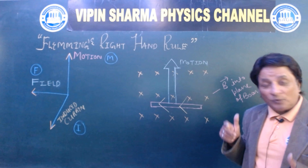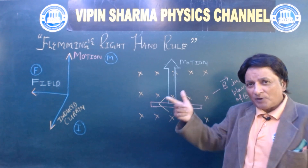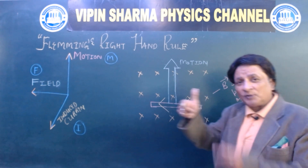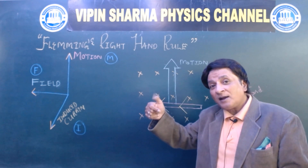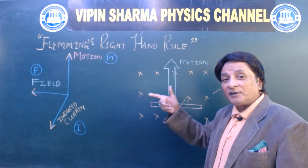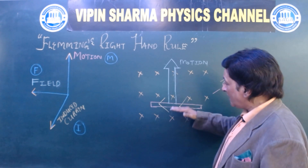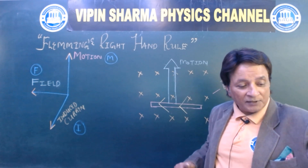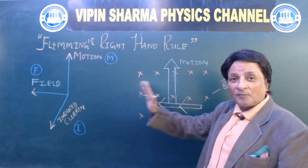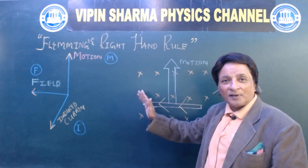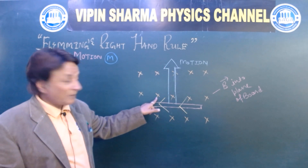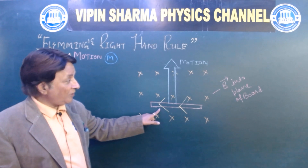We will stretch our right hand — this is the direction of the conductor, this is the direction of the thumb, this is the first finger for field, and this is the central finger for current. So this is the direction of current from my right to left — motion perpendicularly up, B perpendicular — this gives the direction of the induced current.